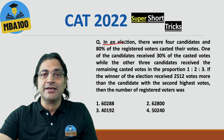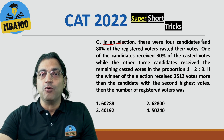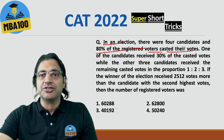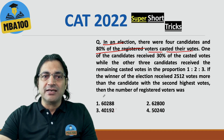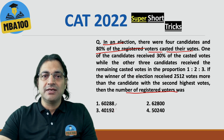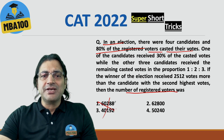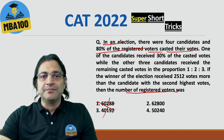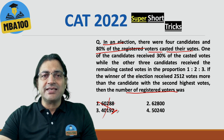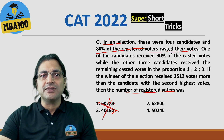In this question, they're asking: in an election there were 4 candidates, and 80% of the registered voters cast their votes. They're asking you the number of registered voters. Two of the answer options cannot be the answer, because 80% of those values is not an integer. So these two are straight away eliminated.